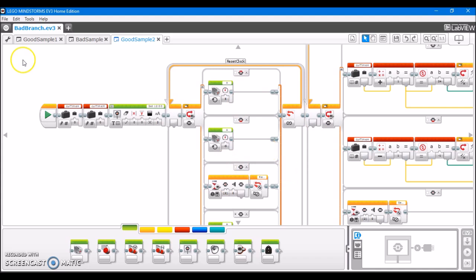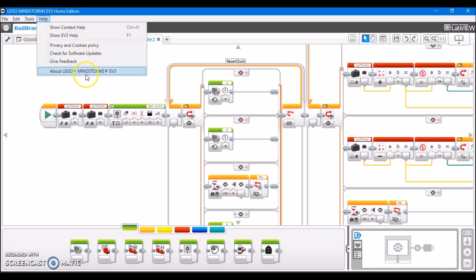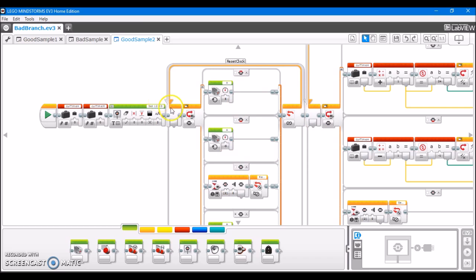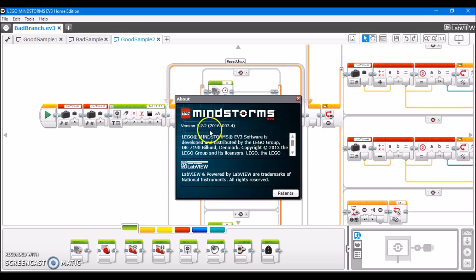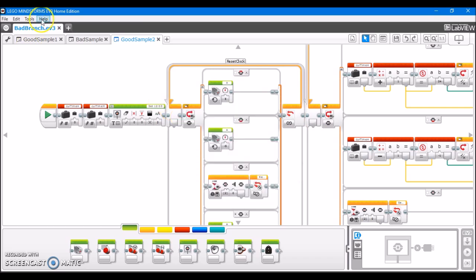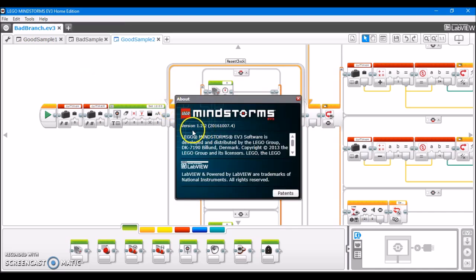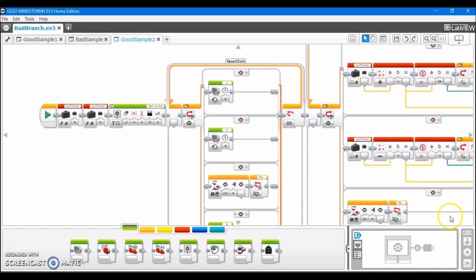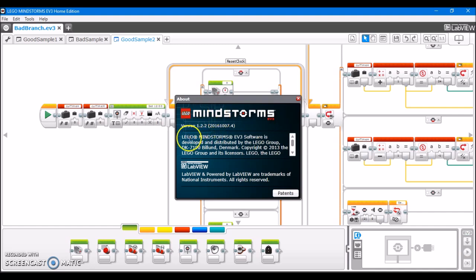Okay guys, I just went through the steps to update my software, and I'm now using version 1.2.2. If you would like to check the version of the software that you currently have, go up to the top here, go to Help, and then click on About LEGO Mindstorms EV3, and that's going to give you the version that you're currently running. We can see here that I have the newest version, 1.2.2, installed.